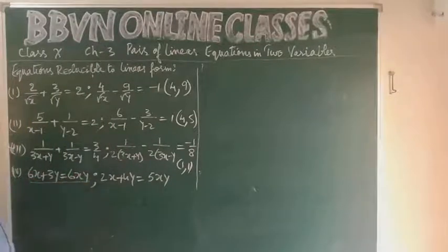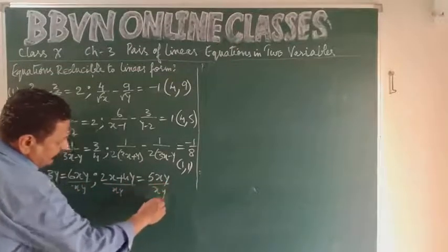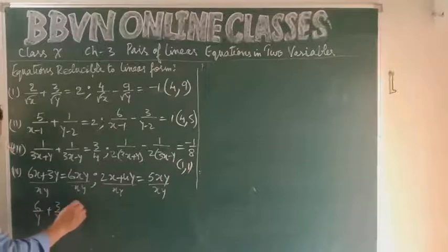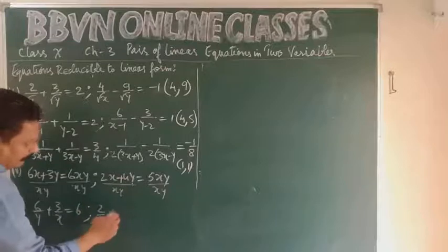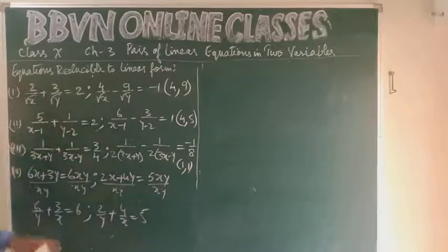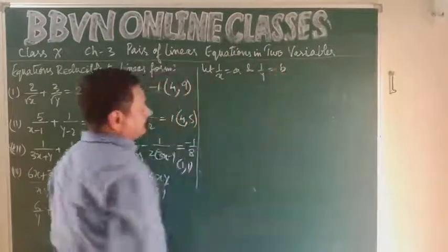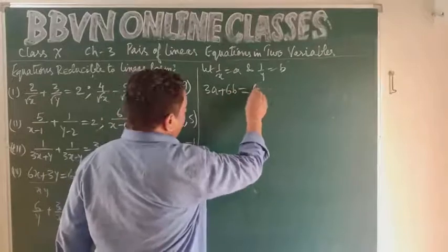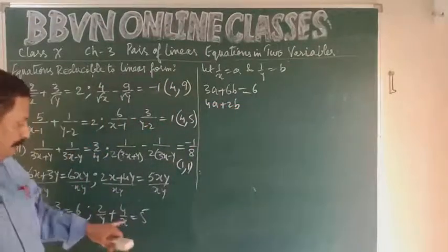Fourth problem: 6x + 3y = 6xy and 2x + 4y = 5xy. Divide both sides of each equation by xy: the first gives 6/y + 3/x = 6 and the second gives 2/y + 4/x = 5. Now let 1/x = a and 1/y = b, so we get: 3a + 6b = 6 and 4a + 2b = 5.